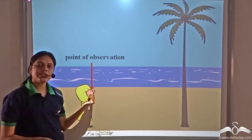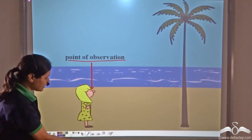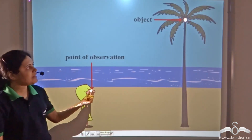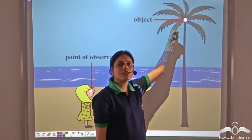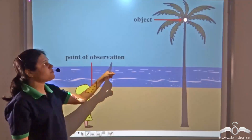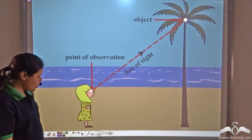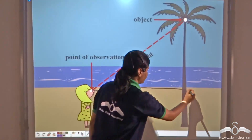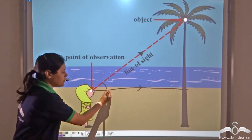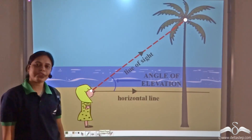The point from where the object is seen is called the point of observation. In this case, the eyes of the girl act as the point of observation, and this is the object — this is the point on the object. The imaginary line joining the point of observation and the object is called the line of sight. We draw a horizontal line from the point of observation, and the angle between this horizontal line and the line of sight is called the angle of elevation.